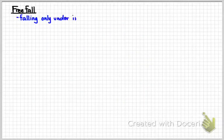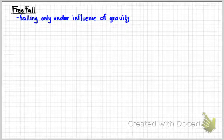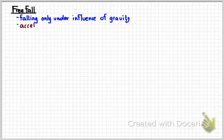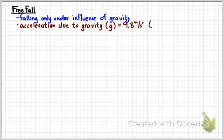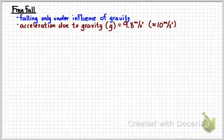We discussed free fall. Free falling means falling only under the influence of gravity — we're ignoring air resistance, drag, and friction. Dropping something is an example of free fall, but carts rolling down tracks are not. Free-falling objects accelerate due to gravity, and on Earth that value is 9.8 meters per second squared, which you can round to 10 meters per second squared.